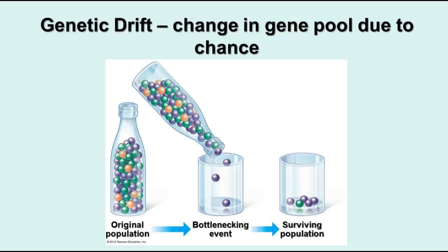Genetic drift is a change in the gene pool due to chance. Here's an example called bottlenecking: if you had great variation in an original population and a catastrophe struck with only a few individuals surviving by chance — just because they happened to be in the right place at the right time — you'd end up with a smaller surviving population. The next generation won't show much of the orange coloring since there's more purple and green, and that changes the overall distribution in the gene pool based purely on chance.